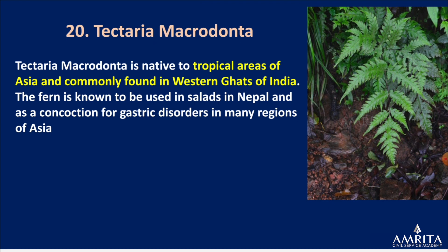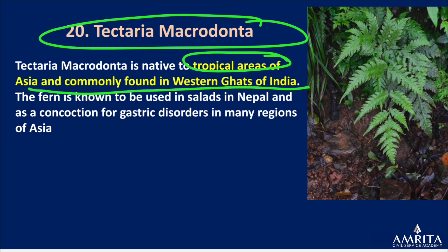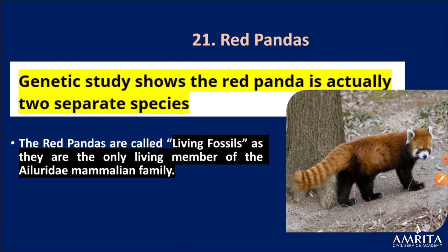Tectaria macrodonta is a fern found in tropical areas of Asia, commonly in the Western Ghats of India. It is used in salads in Nepal and for medicinal purposes.